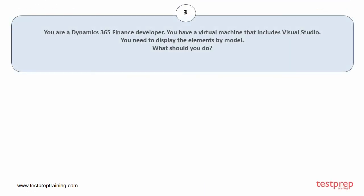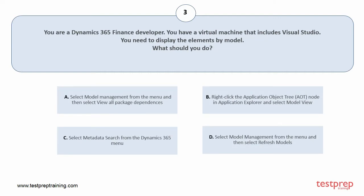Question number 3. You are a Dynamics 365 Finance developer. You have a virtual machine that includes Visual Studio. You need to display the elements by model. What should you do? Your options are: A. Select model management from the menu and then select view all package dependencies. B. Right-click the application object tree node in Application Explorer and select model view. C. Select metadata search from the Dynamics 365 menu. D. Select model management from the menu and then select refresh models. The correct answer is option B.